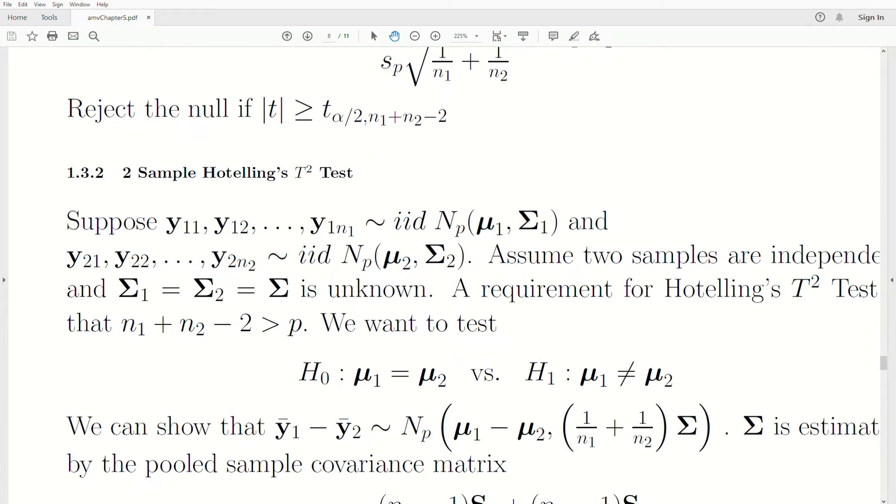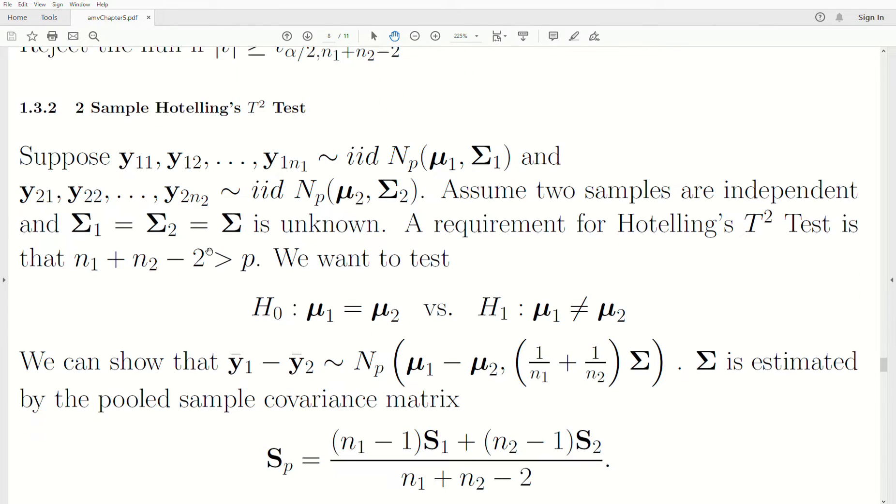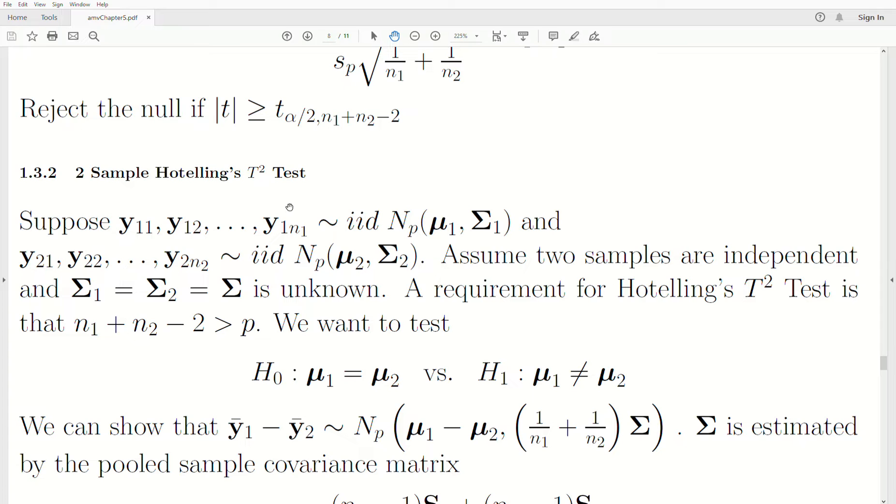The two-sample Hotelling's t-squared test is this. Suppose we have a sample of size N1. These are vectors - each observation, we collect p different pieces of information on that unit. They're multivariate normal, mean vector μ1, covariance matrix Σ1. We collect the second sample, not necessarily the same size, multivariate normal, mean vector μ2, Σ2. We assume the samples are independent and the covariance matrices are equal, but unknown.